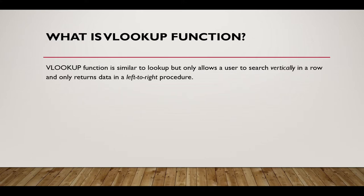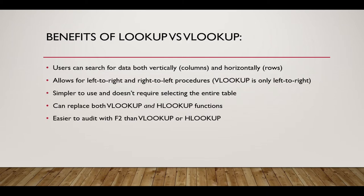VLOOKUP is similar to LOOKUP, but in this case you're going to search for data in a vertical order. It will return the value from left to right only. With LOOKUP you can do that from left to right and also right to left, but with VLOOKUP we are always going to do that in one direction — from left to right.